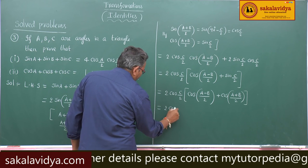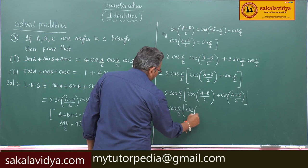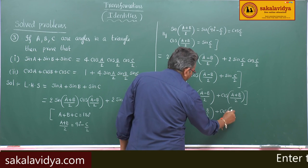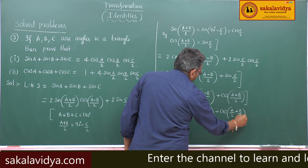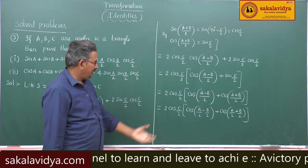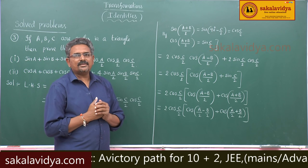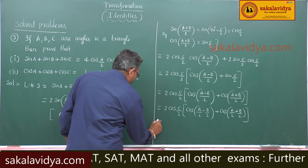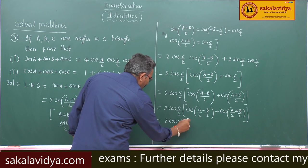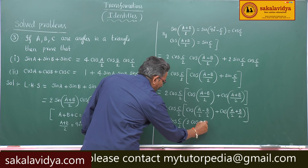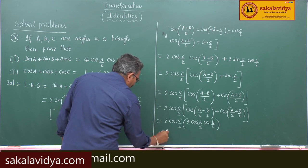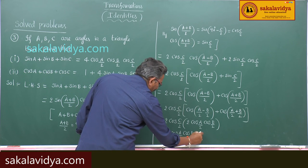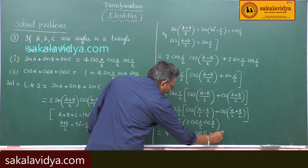For convenience this can be written as 2cos(C/2) into cos(A/2 − B/2) plus cos(A/2 + B/2). This matches the formula cos(A−B) + cos(A+B) = 2cosA cosB, with A replaced by A/2 and B by B/2. So this equals 2cos(C/2) into 2cos(A/2)cos(B/2), which equals 4cos(A/2)cos(B/2)cos(C/2) — the right hand side.